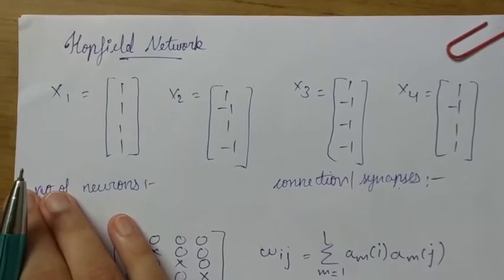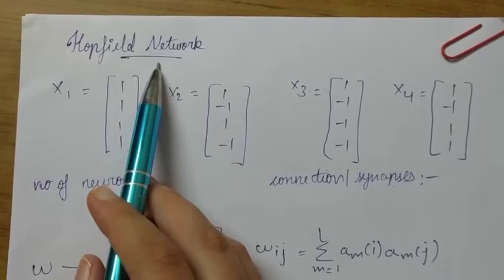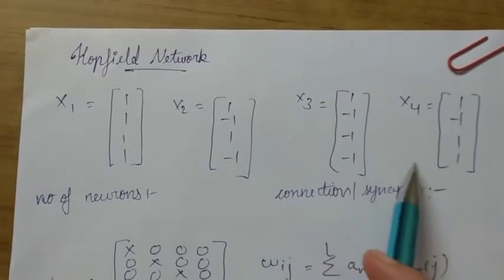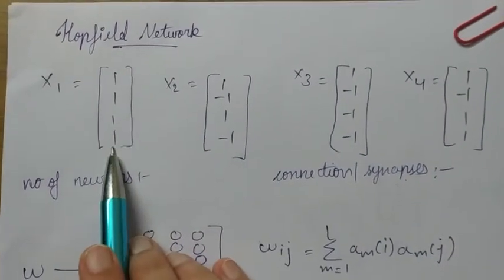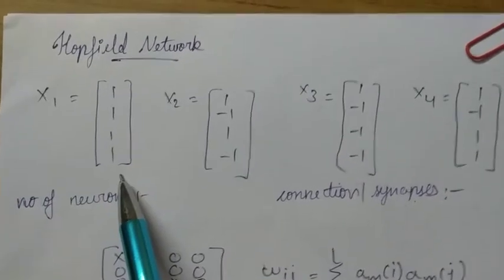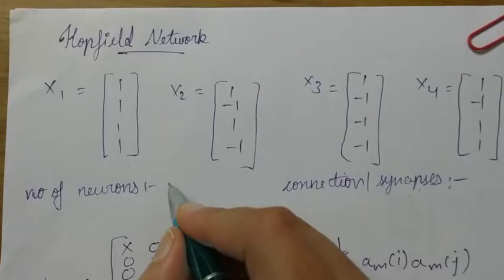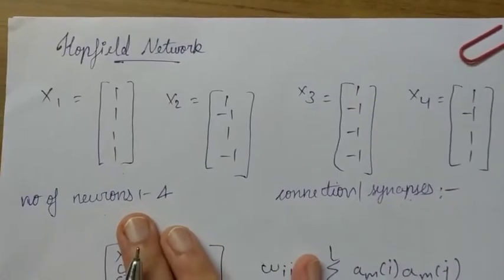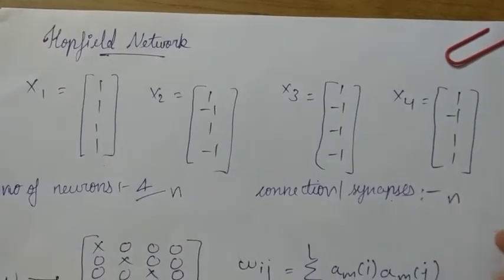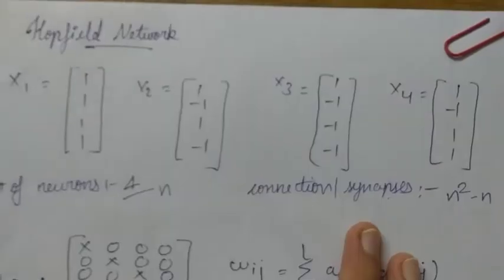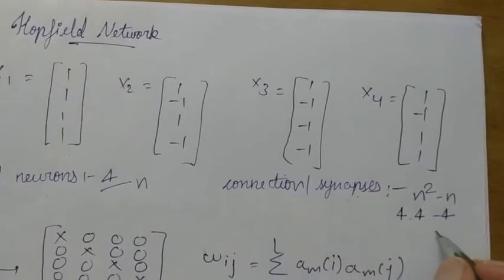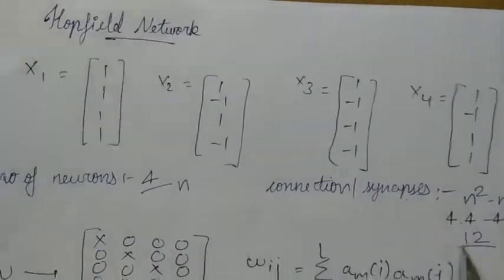As seen in the previous video, the Hopfield network is an example of auto-associative memory. Today we will see how this network actually works. We have been given four different matrices, each representing an activation. Our first task is to decide how many neurons are present. Since each matrix has four elements, the network has four neurons. The number of synapses is given by n squared minus n, so with n equals 4, we have 12 synapses.